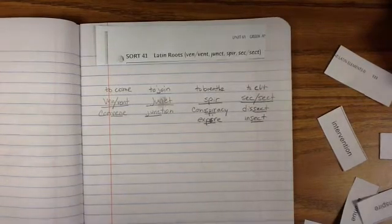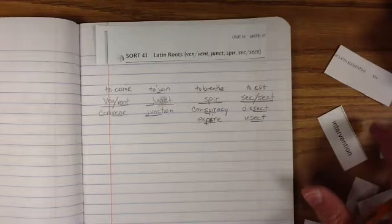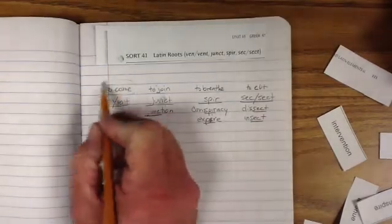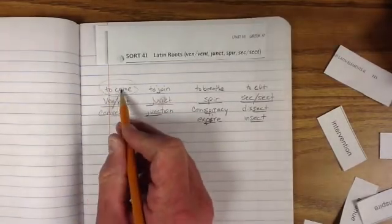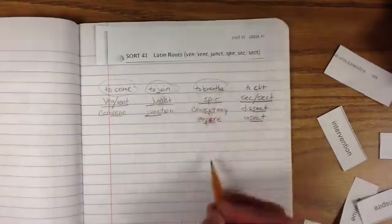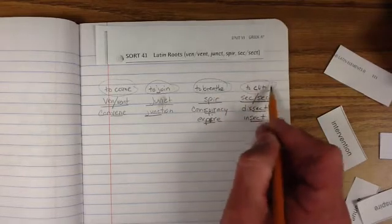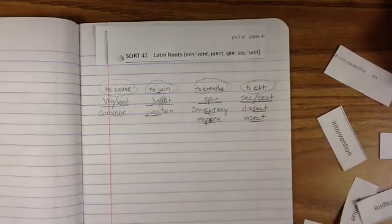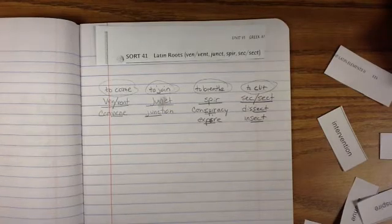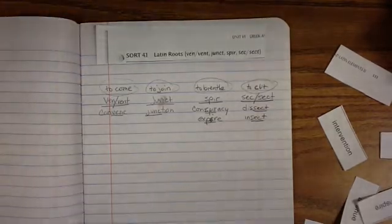All right. So that's what we've got for you today. What I need you to do now is I need you to finish this sort. Make sure you read all the words. Make sure you spell the words and then write it in the correct areas. Make sure you get those all done. Just remember, vent or ven, veen, to come. Junct means to join. Spir or aspire means to breathe. And sect or sect means to cut. Got it? All right. Good luck. See you later.